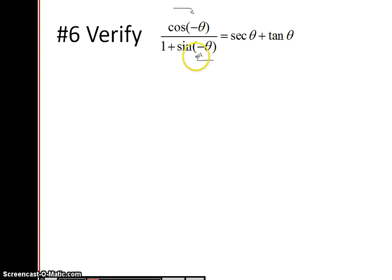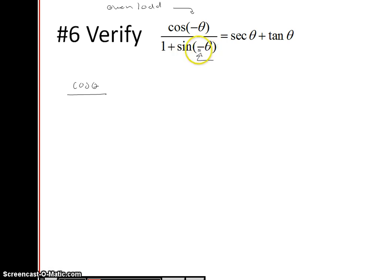I'm just going to replace using the even and odd. You should notice that when you have a negative in front of your angle — theta, t, u, x, whatever the angle is called — replace it with an even and odd. So cosine of minus theta is cosine of theta, and that's all over 1 plus sine of negative theta. And sine of negative theta is minus sine of theta, so this is 1 minus sine of theta.